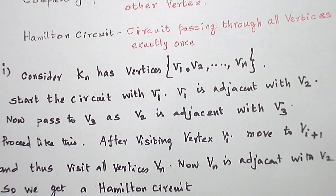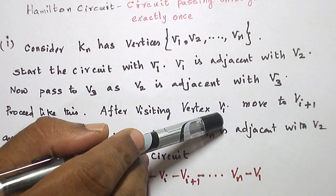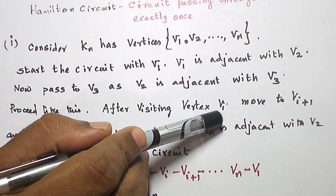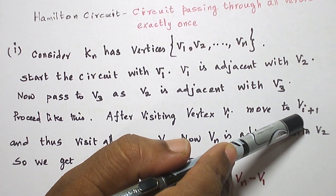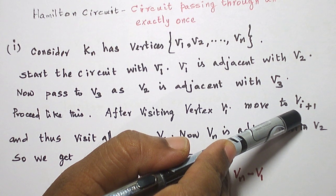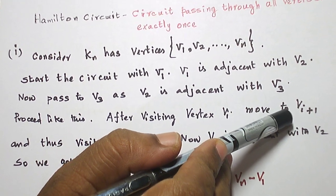And likewise, you proceed on visiting each and every vertex in this order. And once vertex Vi is visited, V1 is adjacent with every other vertex. In particular, it is adjacent with Vi+1. So pass through the edge Vi, Vi+1.